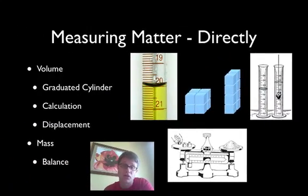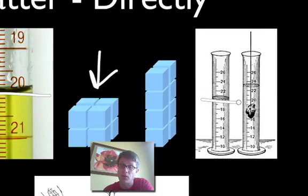How do we measure matter? We could measure it directly. We could put it in, for example, a graduated cylinder. This is the meniscus, and you measure it along that point. We could actually calculate it using volume, or we could use displacement where you measure the amount of water, put an object inside it, and then measure how much it displaces the water.